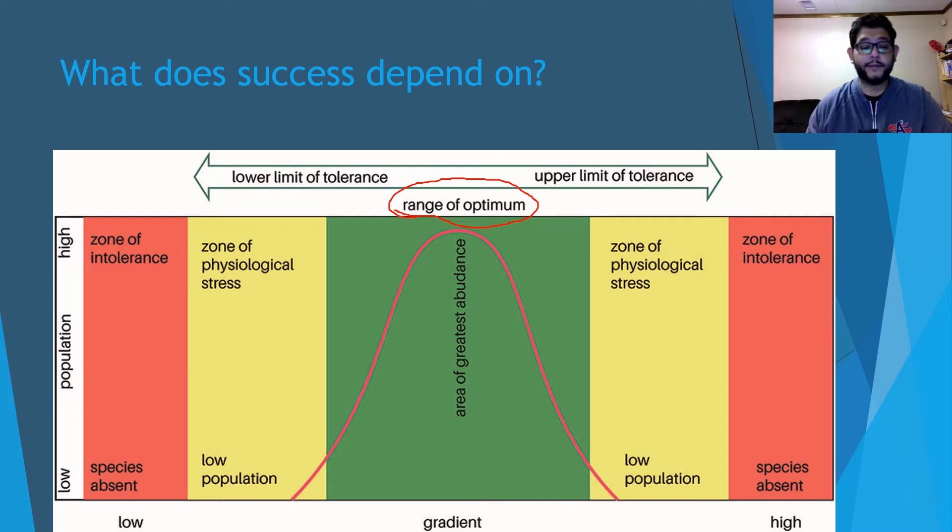And then you have the zone of physiological stress. This is the portion of the tolerance limits where either it's low or high, and they can survive, but they won't be able to do as much. They might have stunted growth, they might have lower clutch sizes if we're talking about birds or fish or any other type of animal. That's where they just can't do as well as if they were in the optimum range.